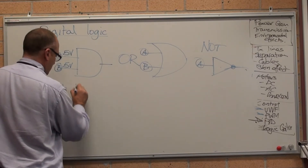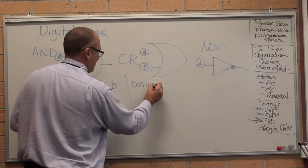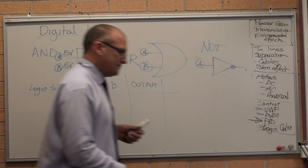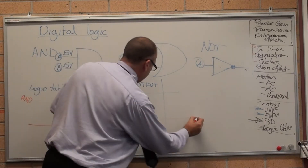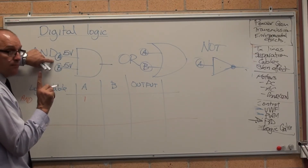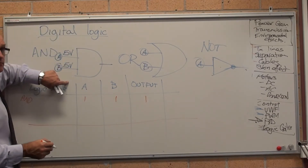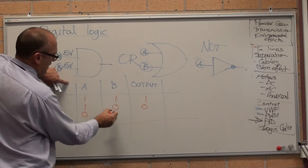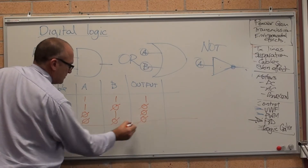If you have got A, B, and output — for an AND gate. I'll do this in orange. If I have got 5 volts, or 1, which means power on, for A and 1 for B, the output turns on. If I have got power on A but nothing on B, it turns off. Nothing on A but power on B, it stays off. Nothing on either of them, it stays off.